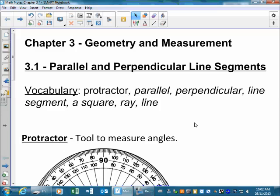So the vocabulary that we're going to consider is what a protractor is, parallel, perpendicular, line segment, square, rays, and lines. Not in that order.